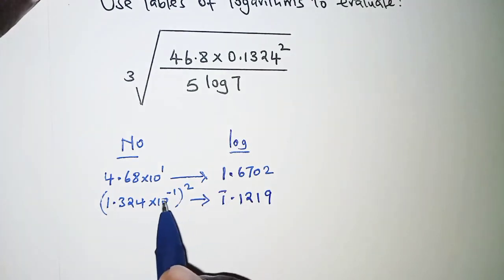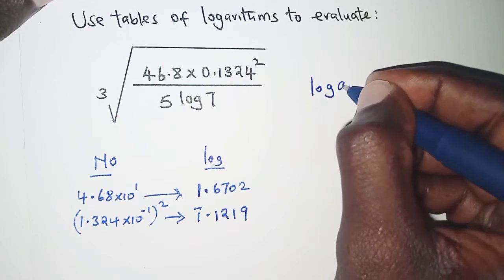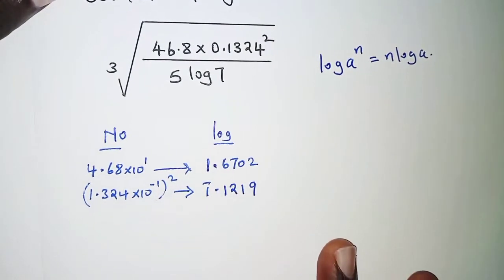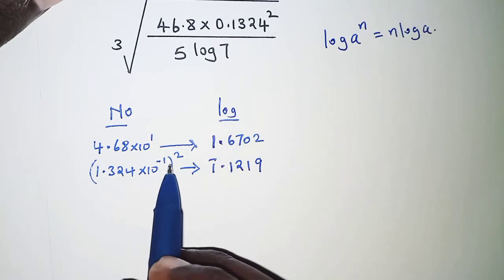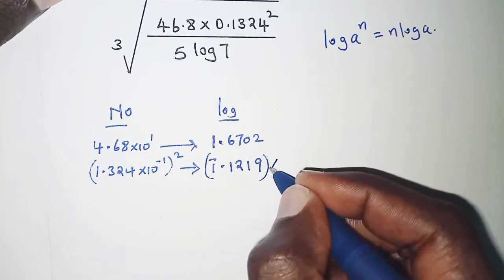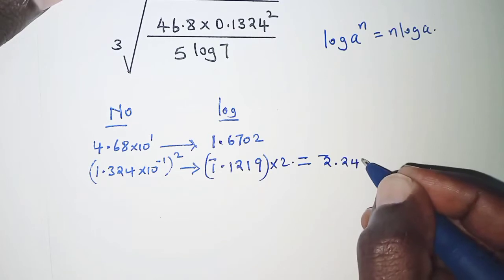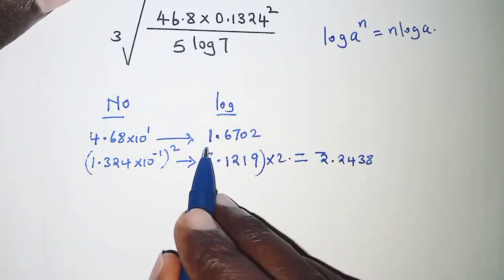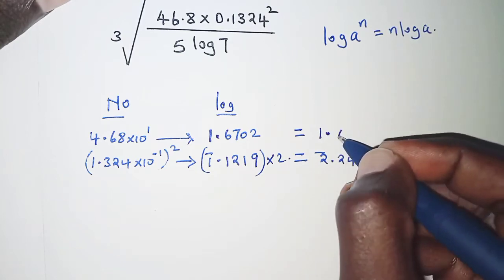But remember this is raised to power 2. By laws of logarithm, if you have logarithm of a number a raised to power n, this would be n log a. Since it was raised to power 2, we multiply this by 2, which gives us bar 2.2438. Let's align this with the other values: we have 1.6702.